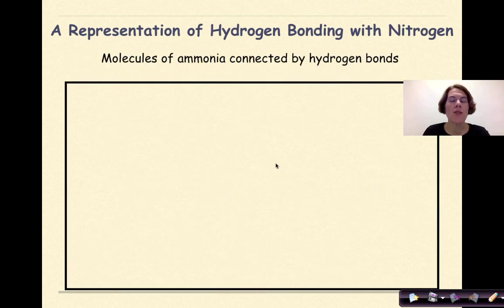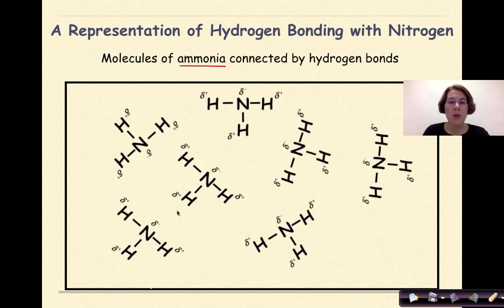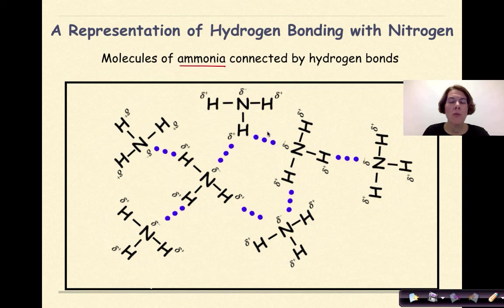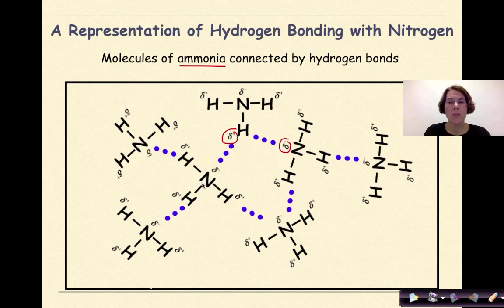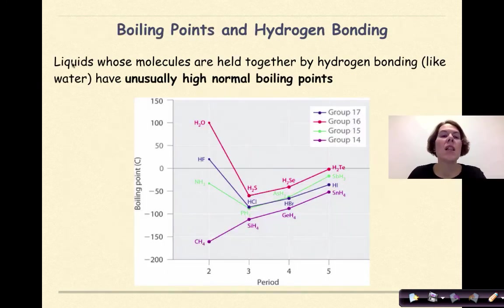Now let's look at a representation of hydrogen bonding with nitrogen. Specifically, we're going to look at molecules of ammonia connected by hydrogen bonds. Here are my molecules of ammonia where the nitrogen is slightly negative and the hydrogens are slightly positive. If we add in the hydrogen bonding, we can see that the slightly negative end of the nitrogen is attracted to the slightly positive end of the hydrogen.